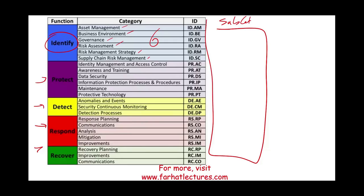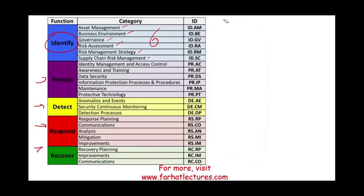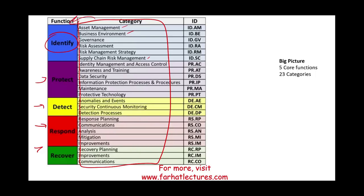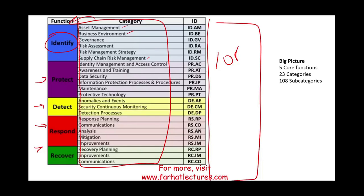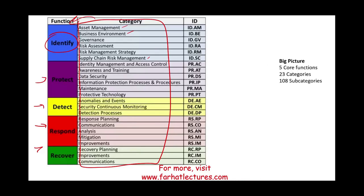We're going to have subcategories, but I'm not going to go that far into them because this lesson is for CPA candidates. I'll explain what the function is and what the categories are. Overall, the framework has five core functions, 23 categories, and 108 subcategories, plus many references that help us understand our cybersecurity program.